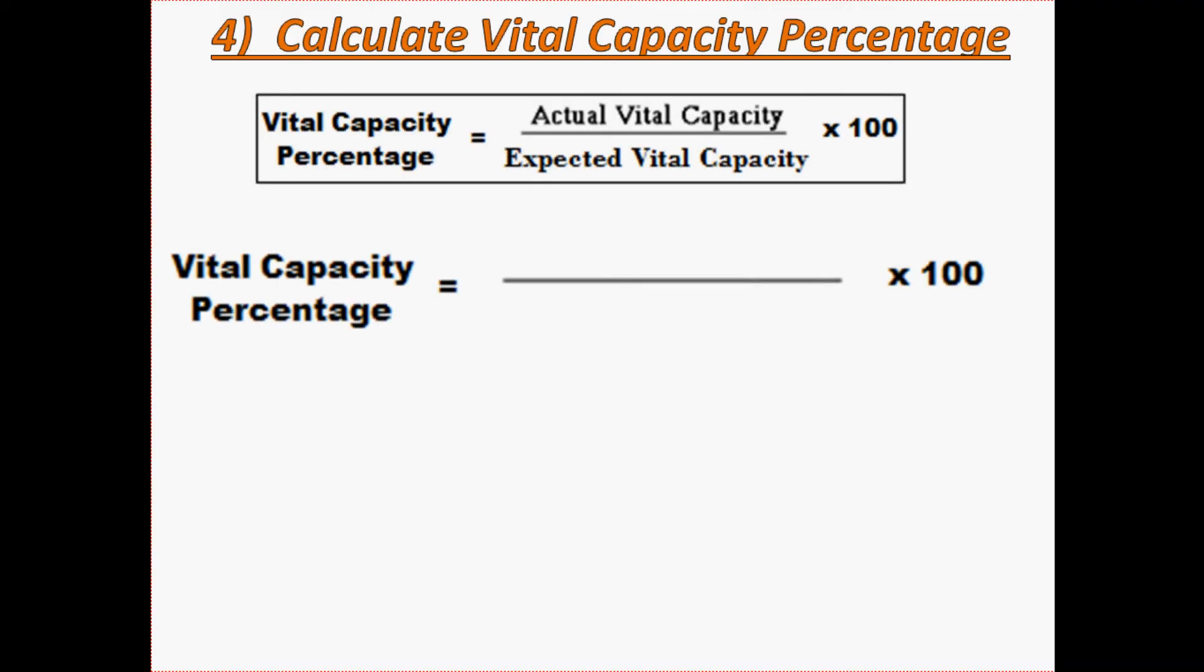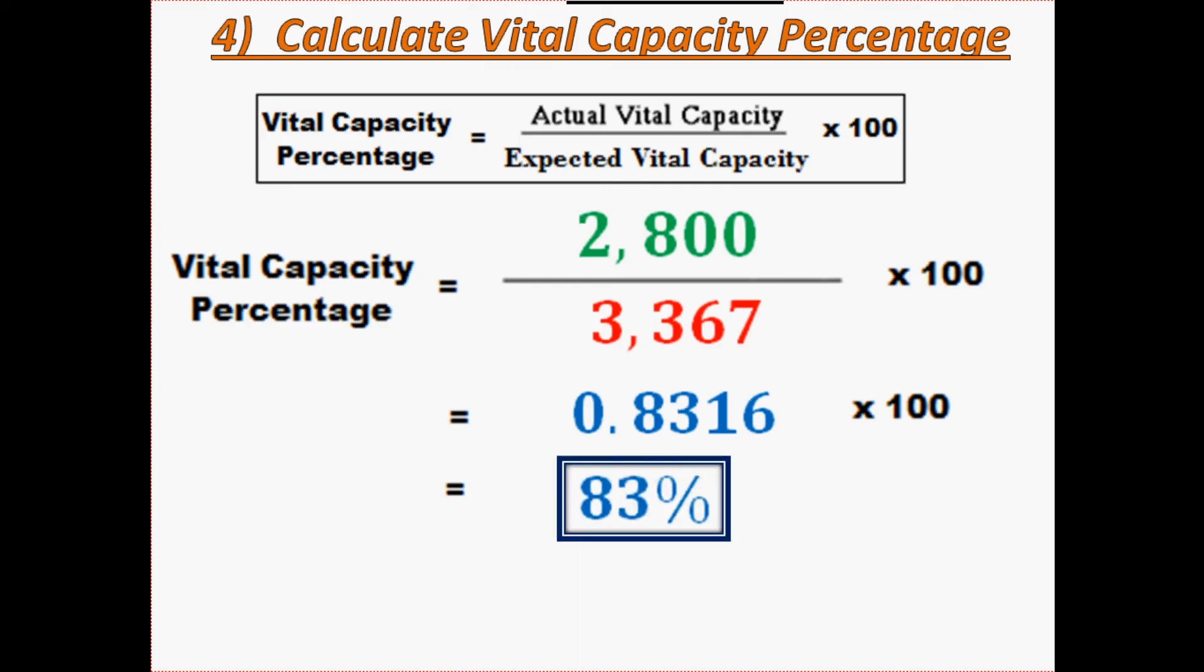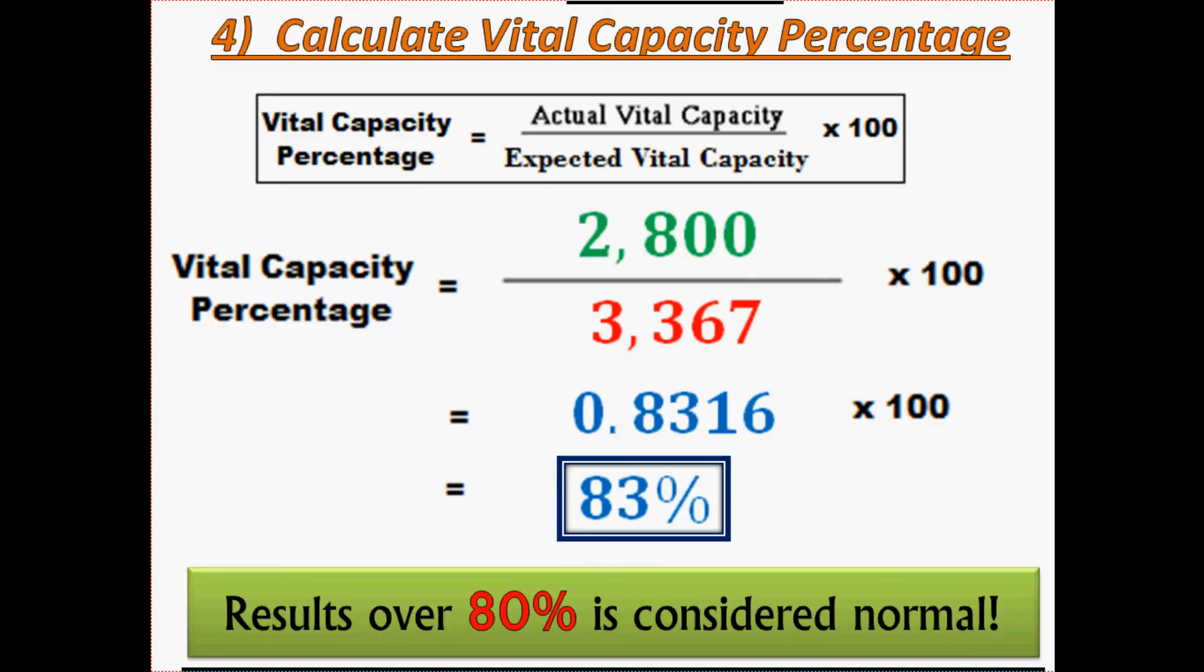So first I'm going to take my 2,800 cubic centimeters. This is from the balloon, blowing up that balloon. And this is my expected vital capacity calculated with those formulas. I'm going to divide those two numbers, and I get 0.8316 multiplied by 100 would give me the percentage. I'm at 83% my expected vital capacity. Anything over 80% is considered normal. 100% would be ideal though. So there it is, I'm at 83%, yay!